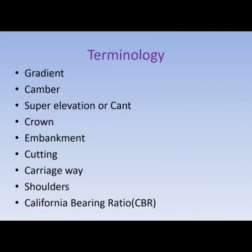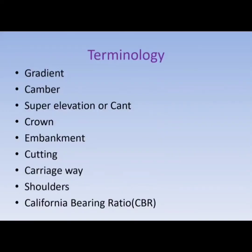In some places, roads are made by filling soil and constructed at a higher elevation than the surrounding areas; these are called roads in embankment. In other places, roads are made after cutting the natural soil near hills; these are called roads in cutting. The area where pavement is made for running of vehicles is called the carriageway. On both sides of the carriageway, areas compacted with soil are called shoulders, which are required for resting of vehicles. The California Bearing Ratio (CBR) indicates the strength of the soil.